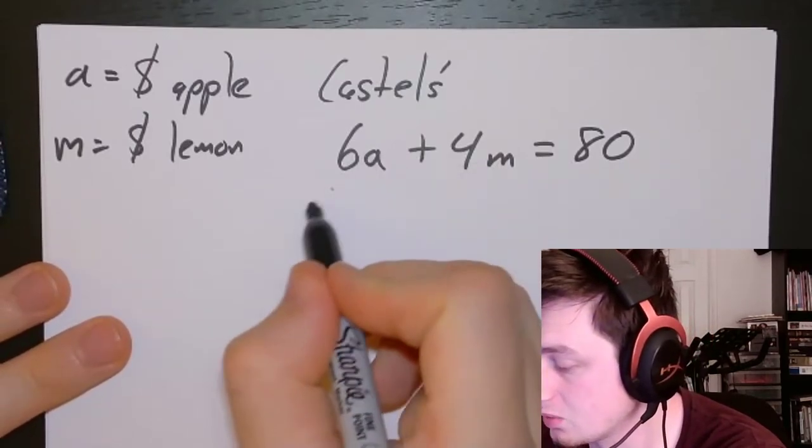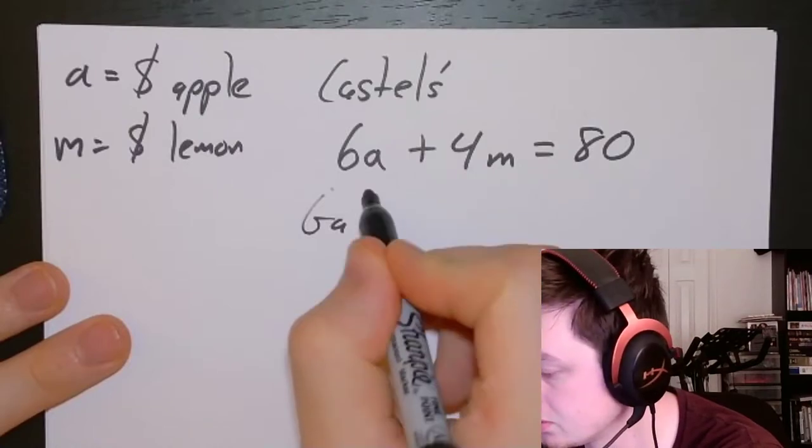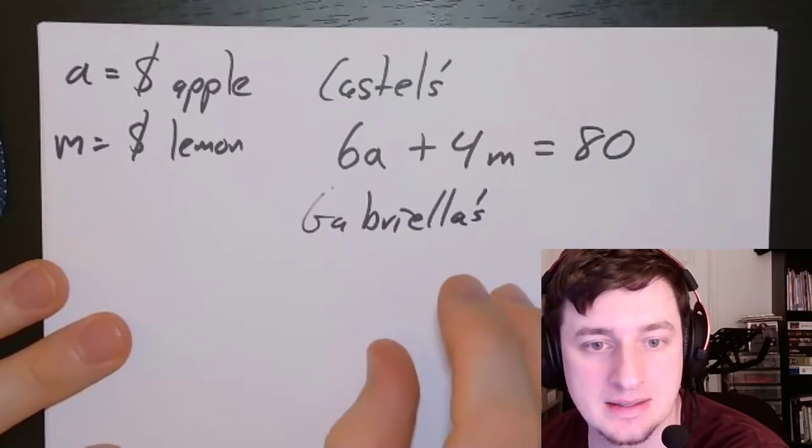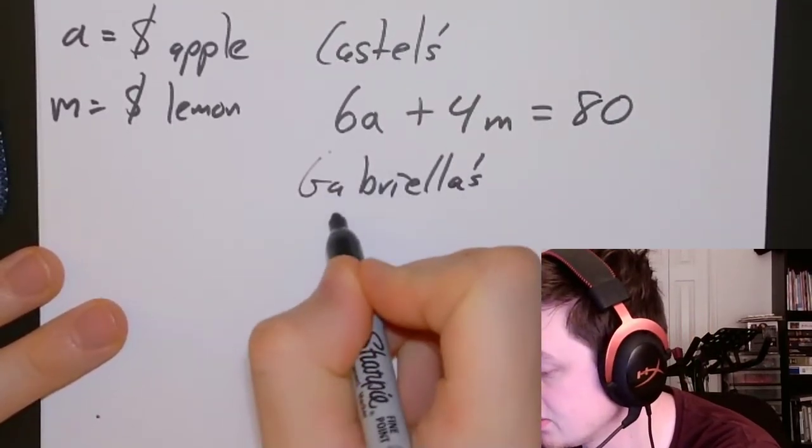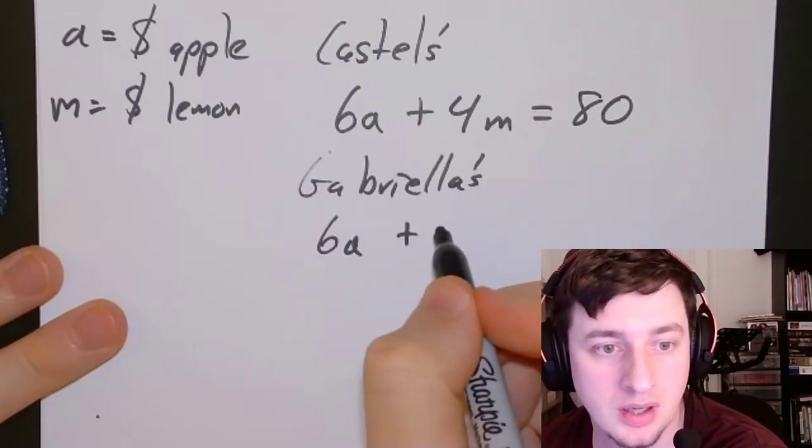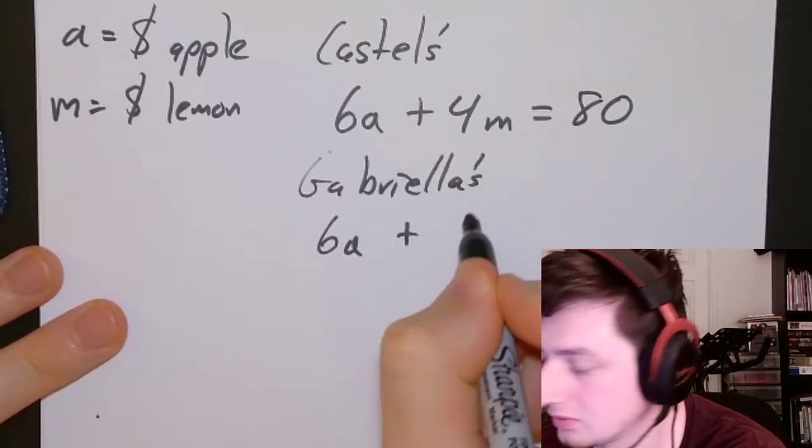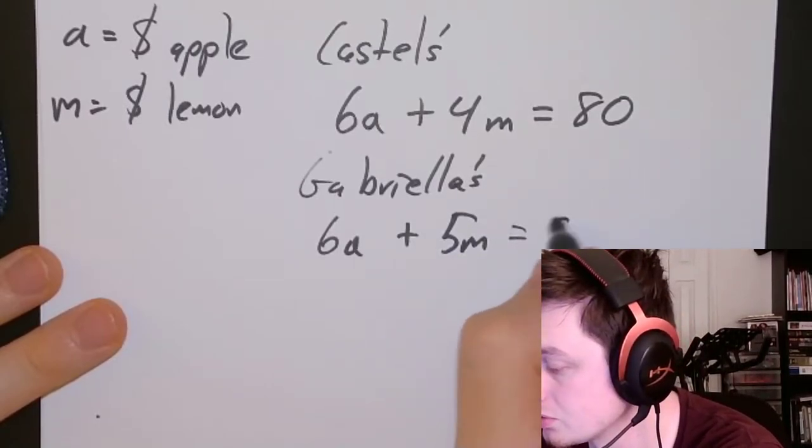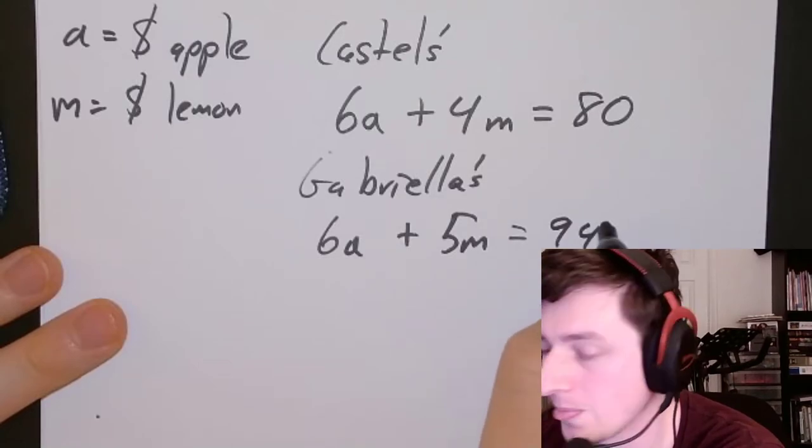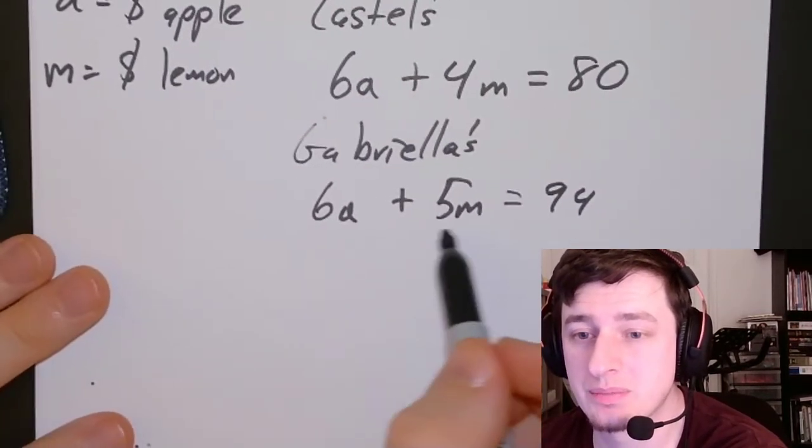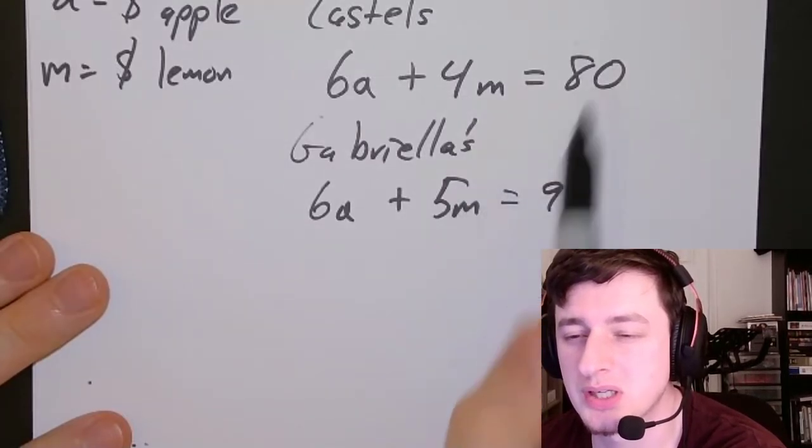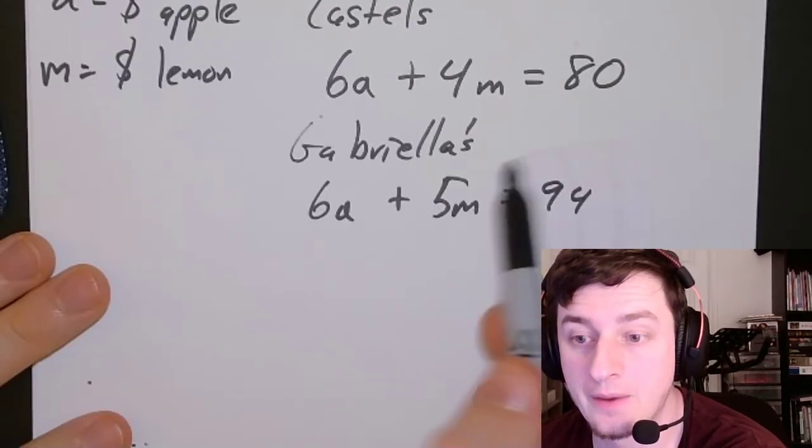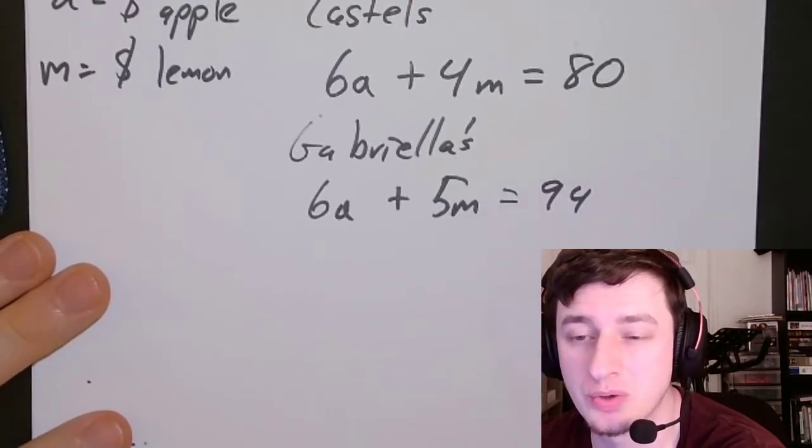Our second equation is Gabriela's, and this is going to be the same number of apple pies and 5 meringue pies. So we should hope that she made more money, and she did, she made $94. Now in this case, we have it pretty simple because she just sold one more thing, so we could pretty quickly figure out how much the meringue pies cost, which is what we're going to do, but we're going to use elimination.